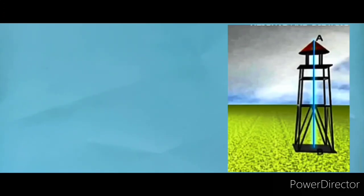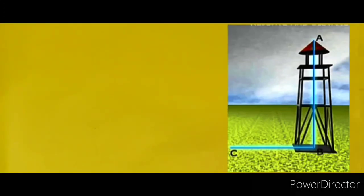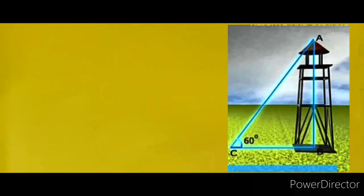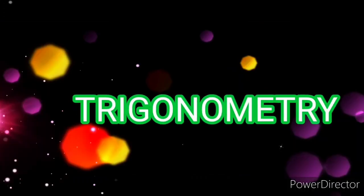How can we find the height of this tower? First we need the distance between observation point C from the foot of tower B. AC is the eyesight from C to A, which is the top of the tower, making an angle theta degrees with the horizontal line. This situation forms a right angle triangle, and then we apply the trigonometry concept to find the height of the tower. Once you imagine, children, how powerful a tool trigonometry is!